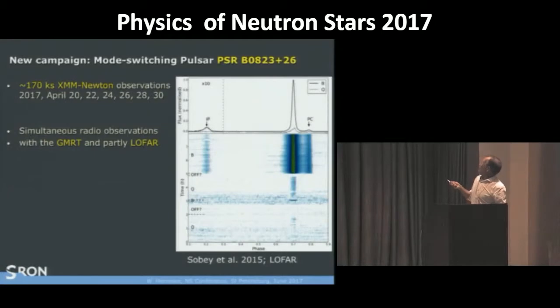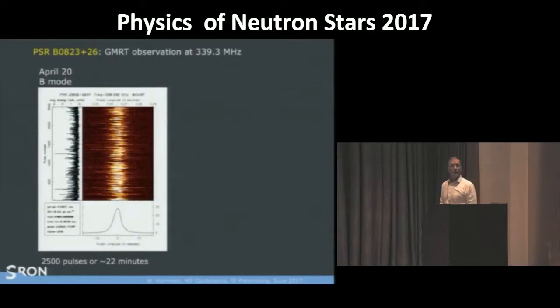And we had this together with GMRT, supported partly by LOFAR. Here you see indeed the mode switching I showed you earlier. In the first observation in April we had a beautiful bright state in radio. Here you see 22 minutes in this case. But we have something like 7.5 hours of XMM-Newton observations in each observation. A beautiful profile. During the whole observation, it was in B mode. Second day, second observation as well.